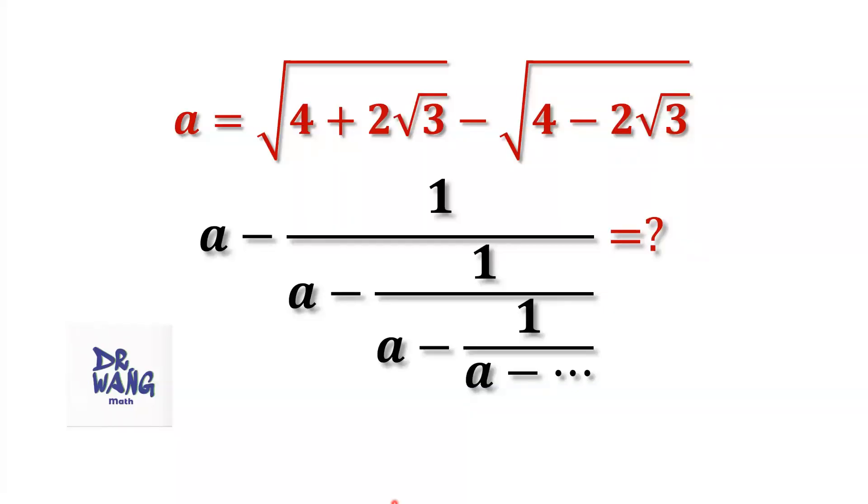Hello, Owen. I'm Dr. Wen. Here is the question. If a equals square root of 4 plus 2 times square root of 3 minus square root of 4 minus 2 times square root of 3,